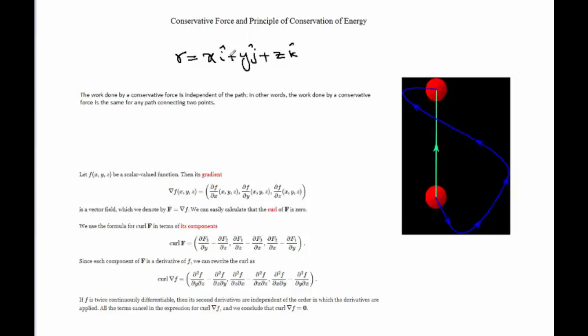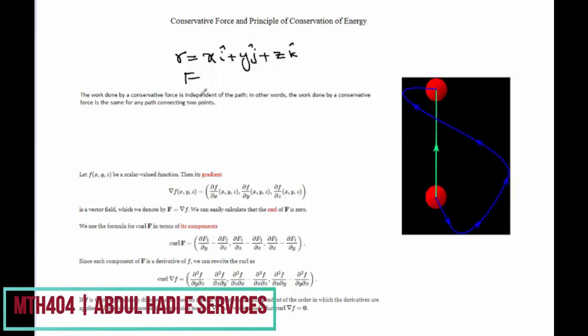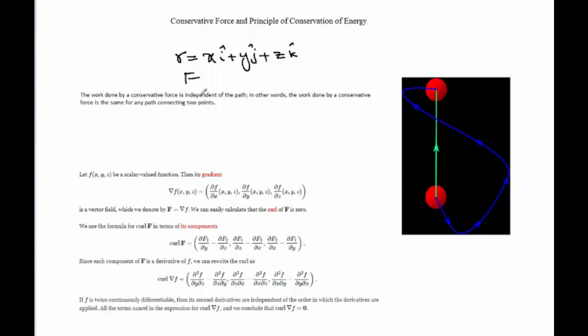Now we have a force f. This field of force f is called conservative when the work done by this conservative force is independent of the path. In other words, the work done by a conservative force is the same for any path containing two points.